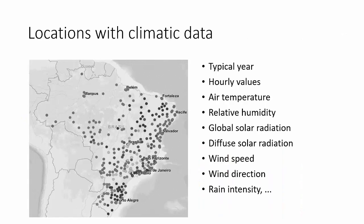Climatic zoning starts with gathering climatic data from several locations. These are the almost 300 locations used in this proposal, with recent data available. In all these locations you have a typical year of data — 8,760 hours. Hourly values: every hour you have values of temperature, relative humidity, radiation, wind speed, and so on. It's a massive amount of data.